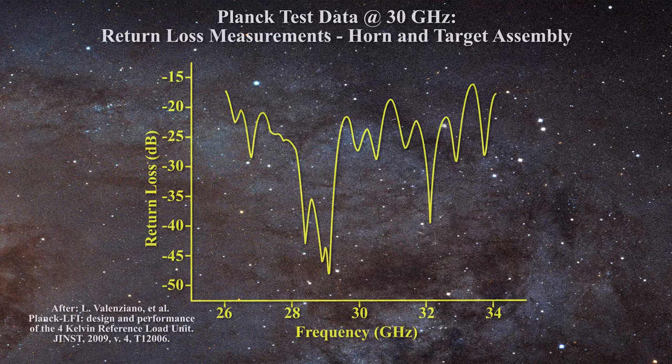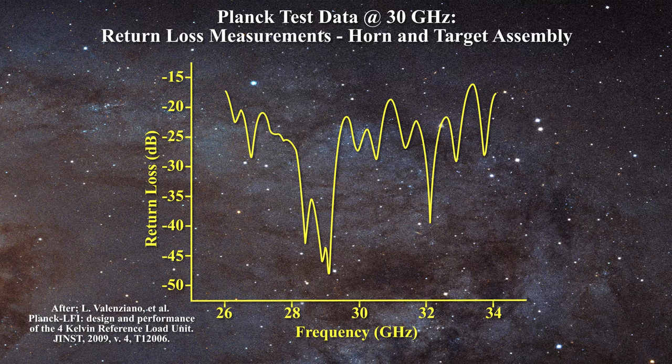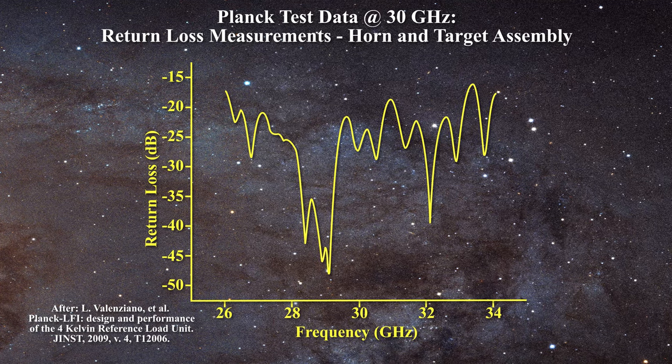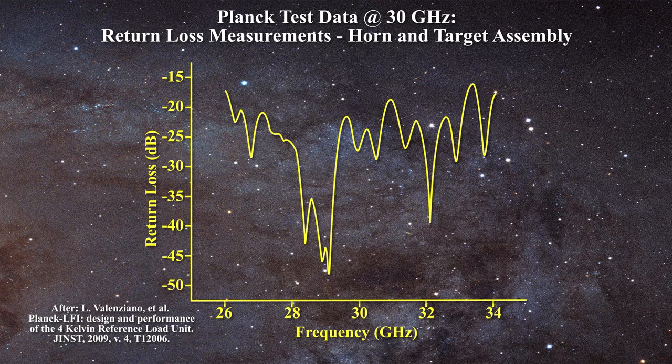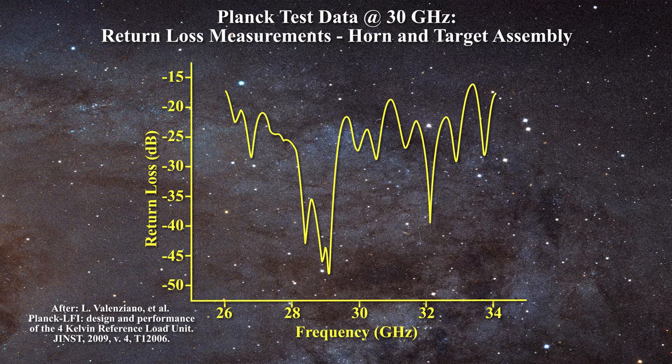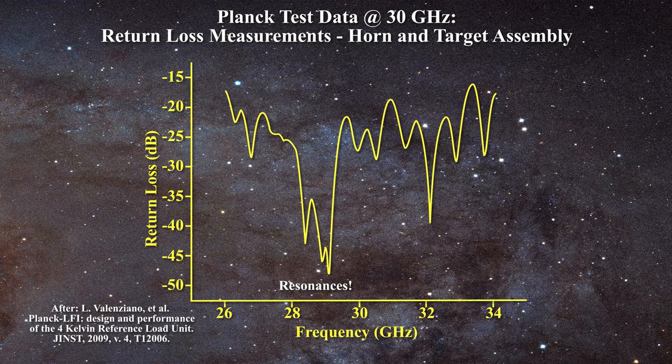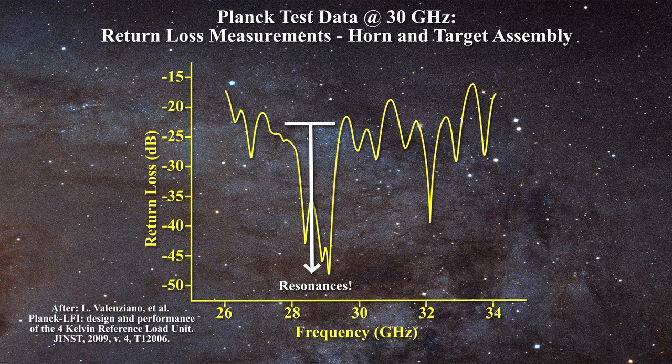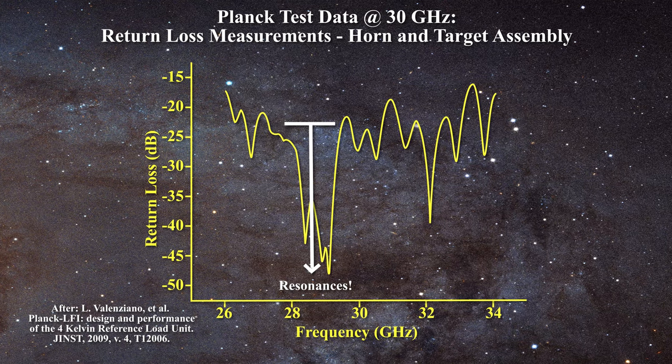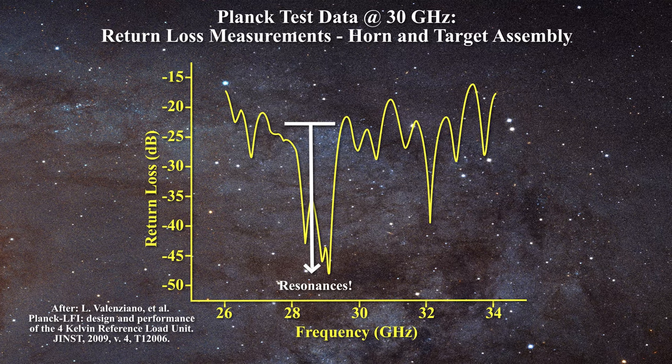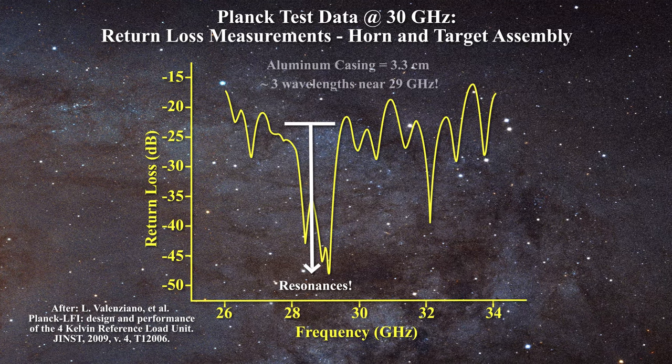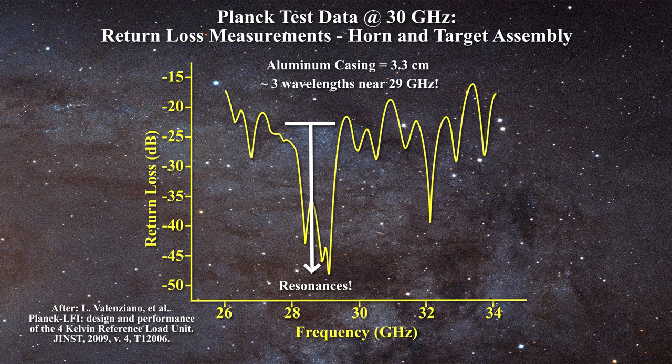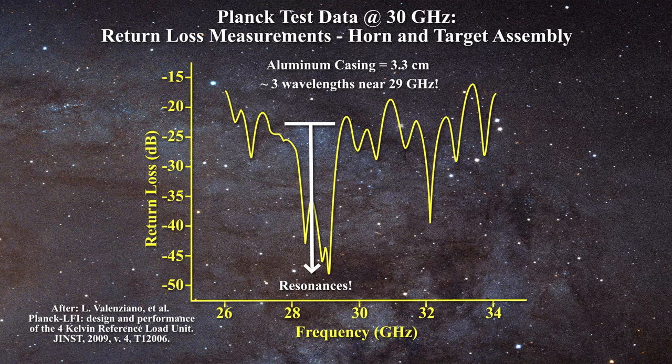Just examine this plot for the return loss measurements for the 30 GHz target assembly. If you examine this plot, you immediately notice a pronounced drop in return loss near 29 GHz. There are three closed dips in the return loss signal, and these are clear signs of resonance phenomena. In fact, it is easy to estimate that these standing waves cause the return loss to drop by approximately minus 20 to 25 dB in this frequency range. Just examine the plot and you'll see a drop from minus 25 to minus 50. That corresponds to strong resonant behavior, as the casing dimensions of 3.3 cm is equal to about three wavelengths near 29 GHz. This demonstrates conclusively that these targets are not acting as proper blackbodies at 30 GHz.